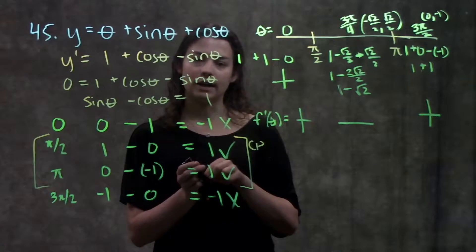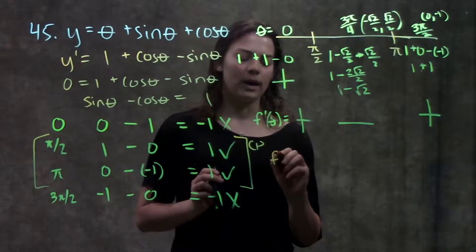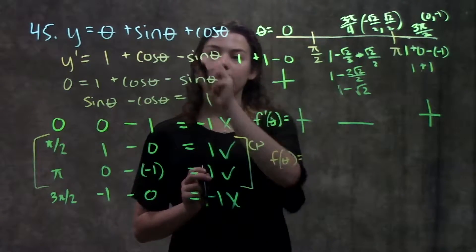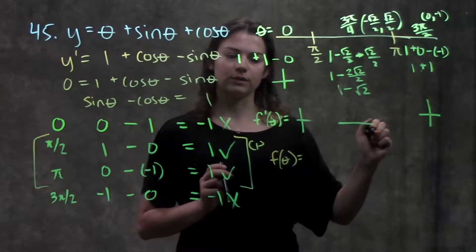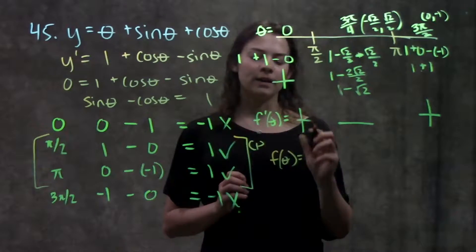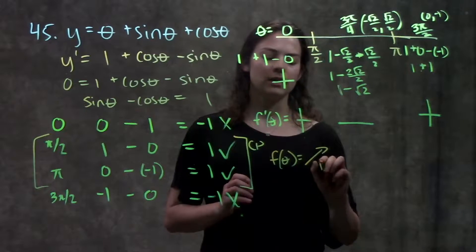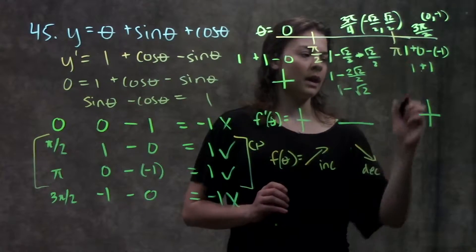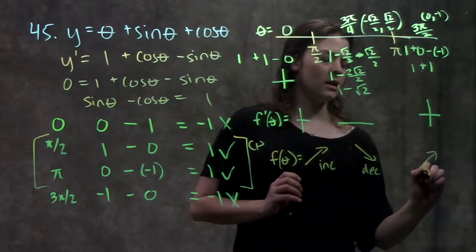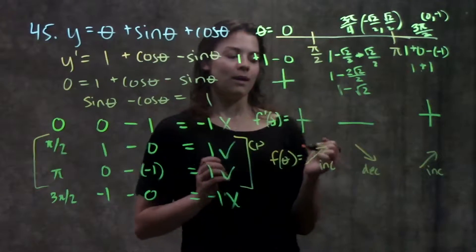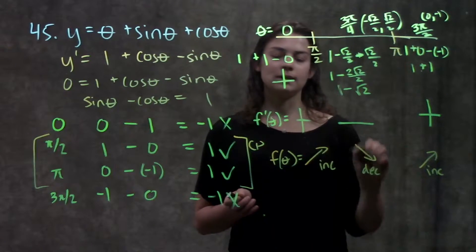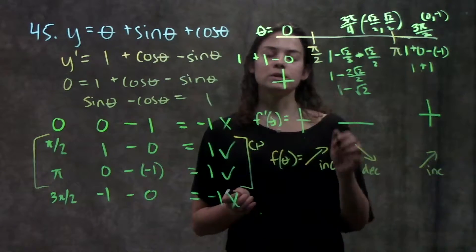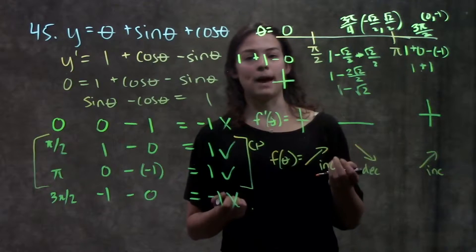Okay, so I have all those signs. Now I'm going to say what f of theta is doing, what my original function is doing on these intervals. When the derivative is positive, that means that my original function is increasing. So when it's negative, it's decreasing. And over here, it's positive again. So my original function is increasing. Okay, and now just looking at my signs here, I can tell which of these critical points is the min and which is the max.